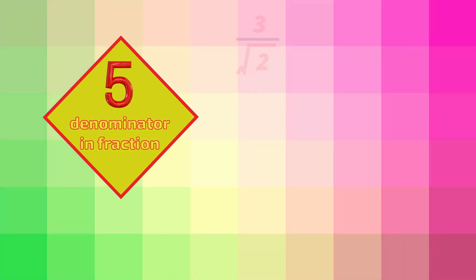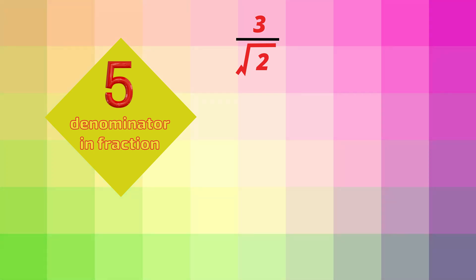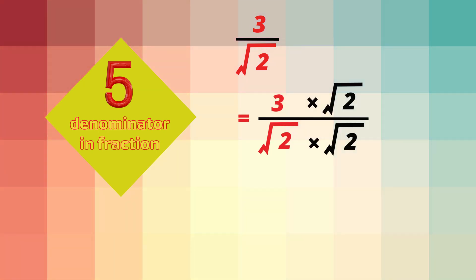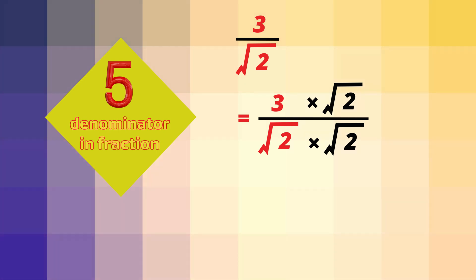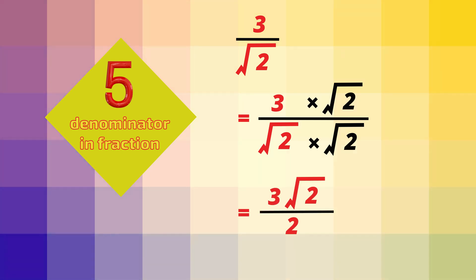Now we will simplify a fraction where the surd is the denominator on the bottom of the fraction. Let's simplify 3 divided by root 2. Here's a useful tip: multiply the top and the bottom of the fraction by the surd that's on the bottom. The top of the fraction becomes 3 root 2. The bottom of the fraction is root 2 times root 2, which is just the number 2. So the answer is 3 root 2 divided by 2.